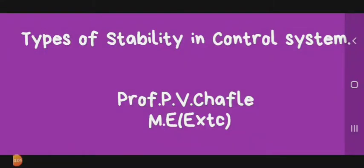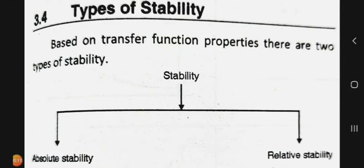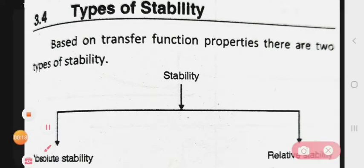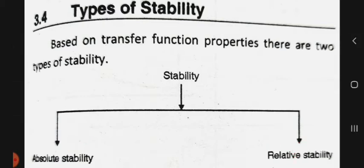Hello students, today we see the types of stability in control systems. Based on transfer function properties, there are two types of stability: the first is absolute stability and the second is relative stability.